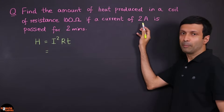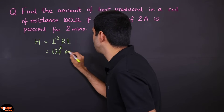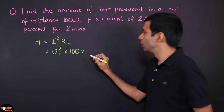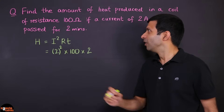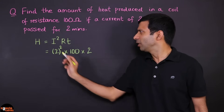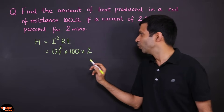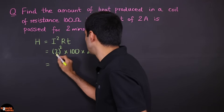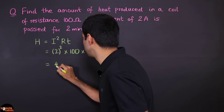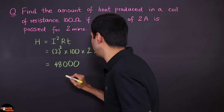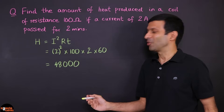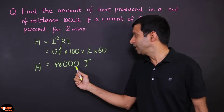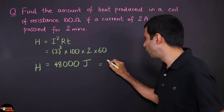Now let's substitute the values. Current is 2 ampere, so it's going to be 2 squared into the resistance, which is 100 ohm. And what's the time going to be — 2 minutes? No, be careful. The SI unit of time is seconds, so all quantities should be in SI units. So 2 minutes needs to be converted: 2 into 60 seconds. Now just multiply these numbers: 4 into 2 is 8, times 6 is 48, with 3 zeros — so the heat produced is 48,000. The unit of heat energy is also joules. So the heat produced is 48,000 joules, or 48 kilojoules.